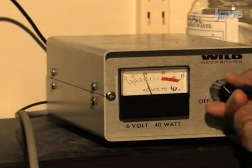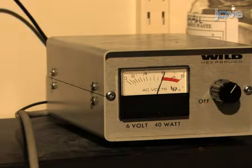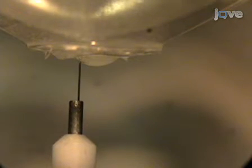Set the power supply to 6 volts. While viewing under the dissecting microscope, insert an electrode into the tip of the syringe, such that 90% of the electrode's length is in the solution.